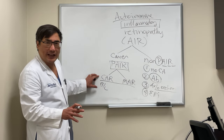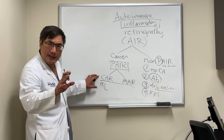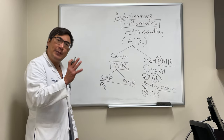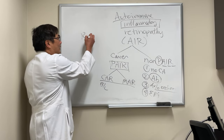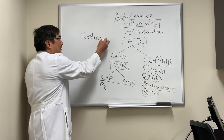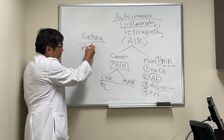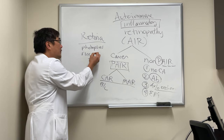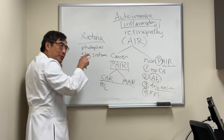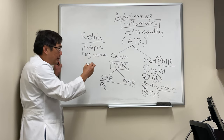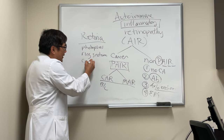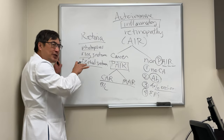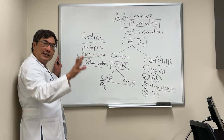CAR patients don't know they have cancer, so you have to look with PET scan or CT scan. MAR patients know they have melanoma. The retinal symptoms include photopsias — flashing lights — and a ring scotoma, which is a scotoma where you can put your ring finger right through the middle of it, or it can be a central scotoma.